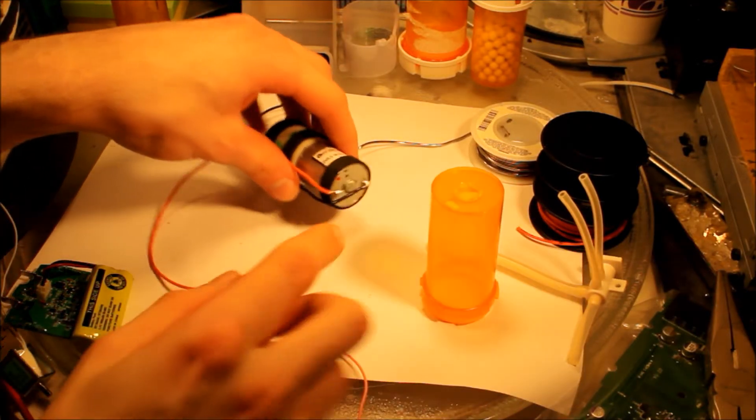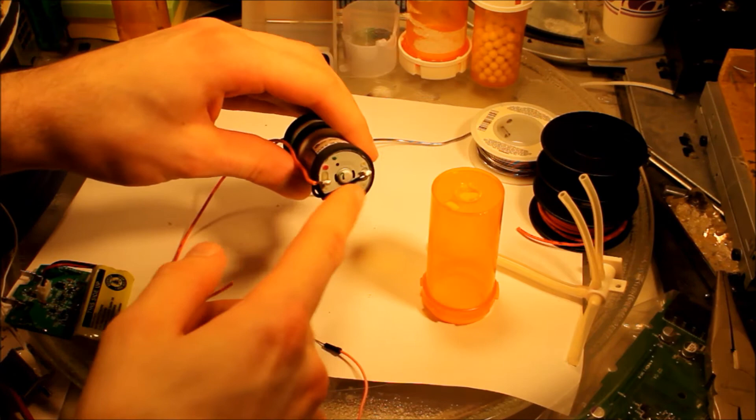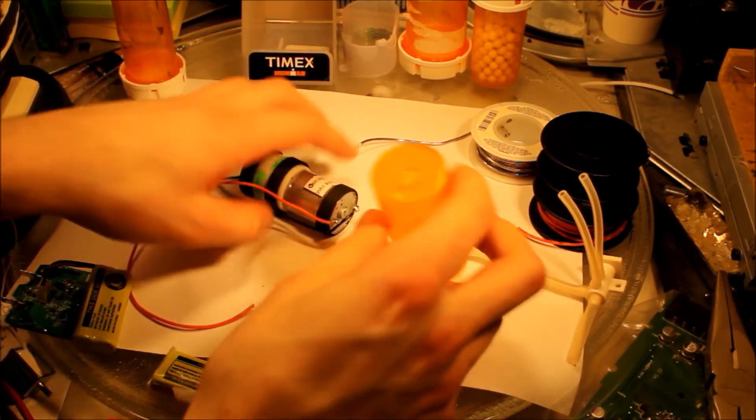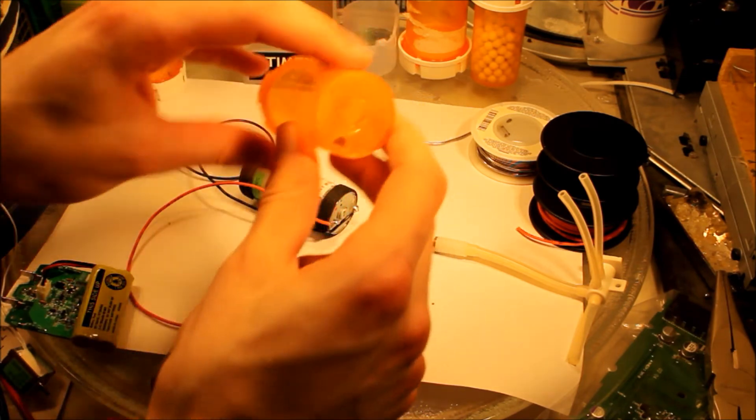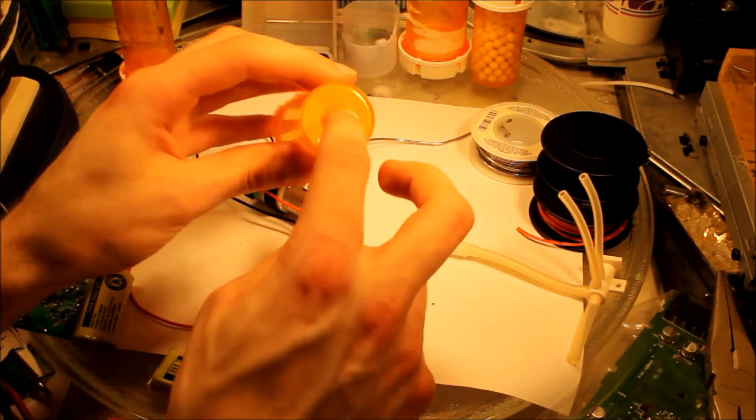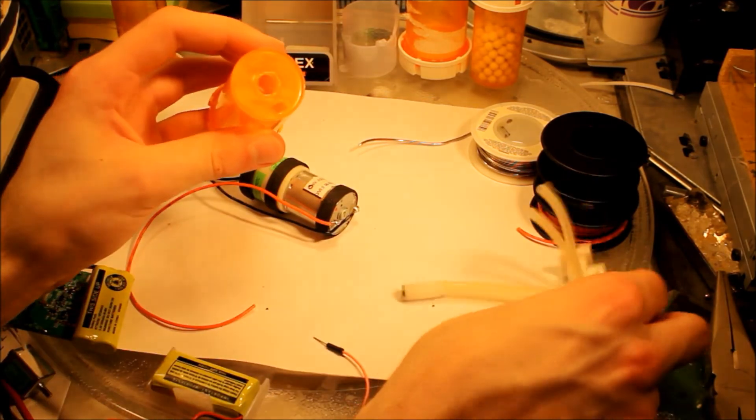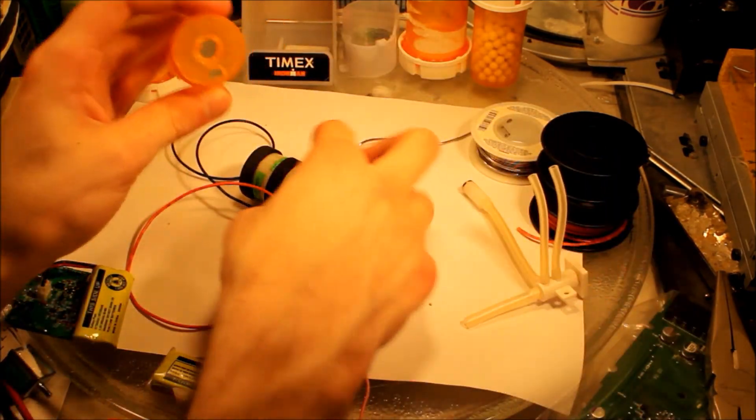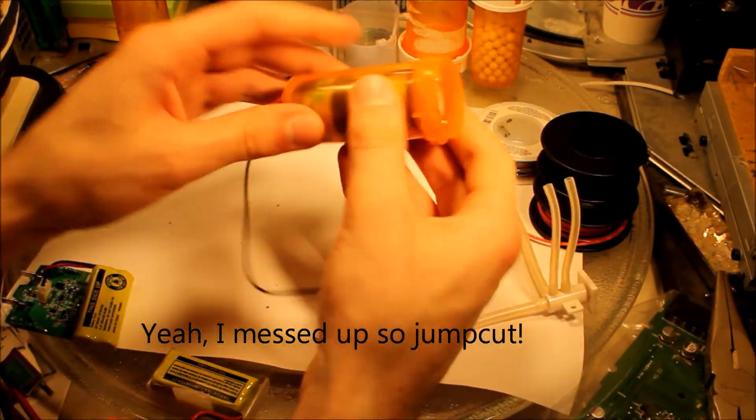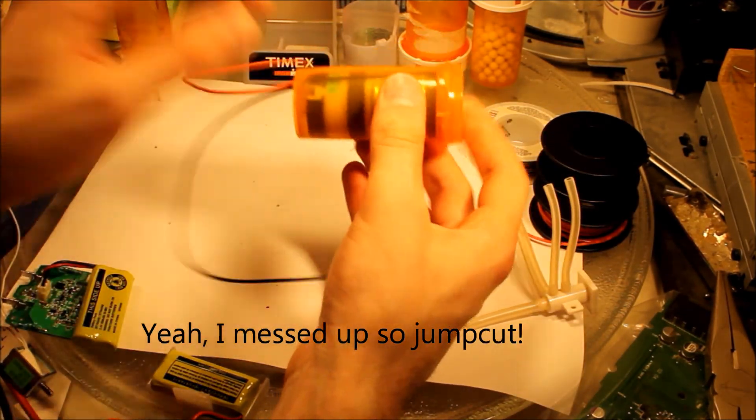I've soldered the positive and negative leads onto the contacts of the motor, the pump. I've also melted holes inside this pill canister. Now it's ready to be loaded inside. This will be the hole for the air pipe, and this one for the wiring. Let's see if I can do this on camera. There we go, just like that.